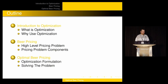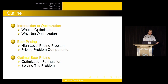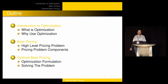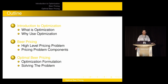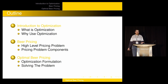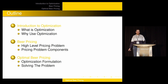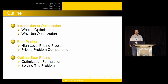Let me just jump right in. So what am I going to tell you about today? We're going to talk about optimization. Here's an outline. I'm going to tell you what optimization is and why you should use it. I'm going to tell you about our pricing problems at Anheuser-Busch — the high-level pricing problem with beer pricing and its components — and how to solve that optimally using optimization: the formulation and how we solve it.